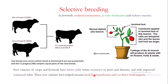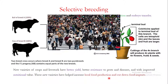Using different techniques of selective breeding, you can produce new varieties of crops and livestock which have better yield, better resistance to pests and diseases, and improved nutritional value. These new varieties also help to increase local food production and cut down food imports.